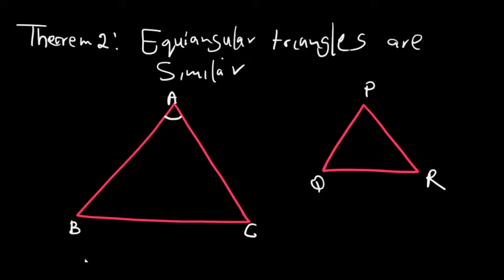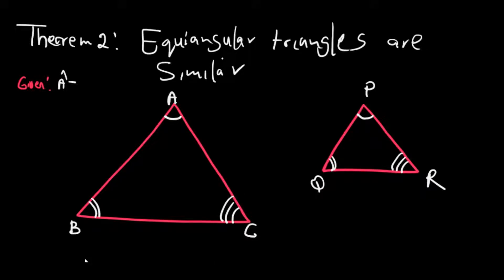We are told that angle A equals angle P, angle B equals angle Q, and angle C equals angle R. So that's what you're given in this theorem here — given that angle A equals angle P, angle B equals angle Q, angle C equals angle R.